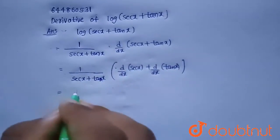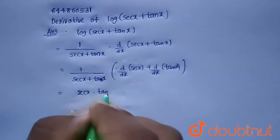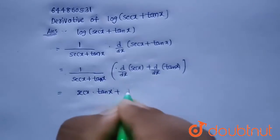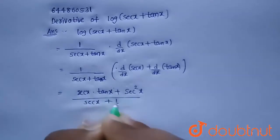So d by dx of secant x is nothing but secant x into tan x plus derivative of tan x is nothing but secant square x divided by secant x plus tan x.